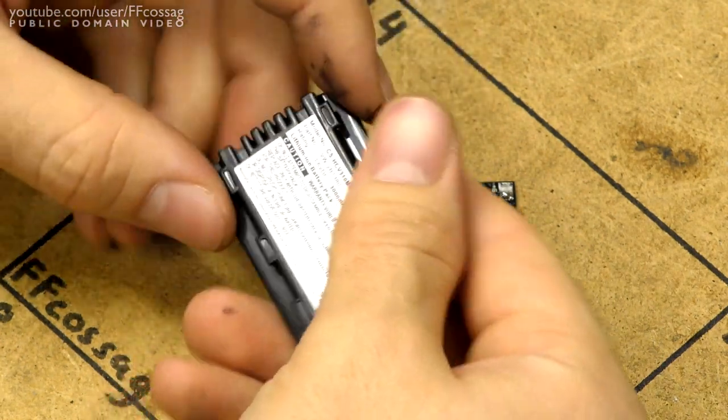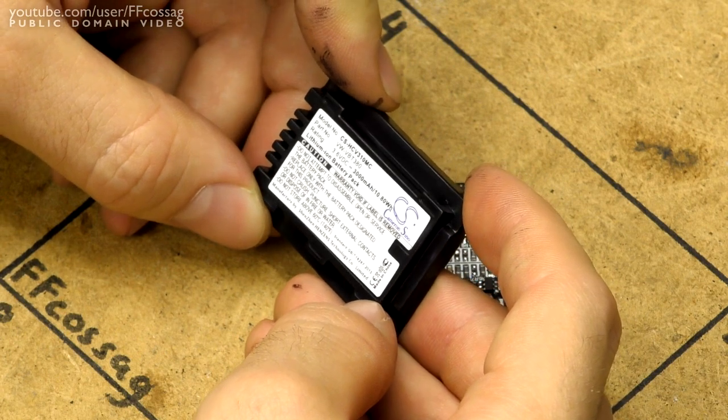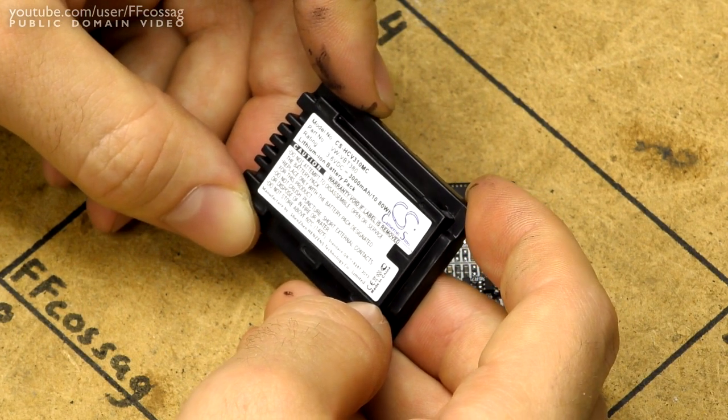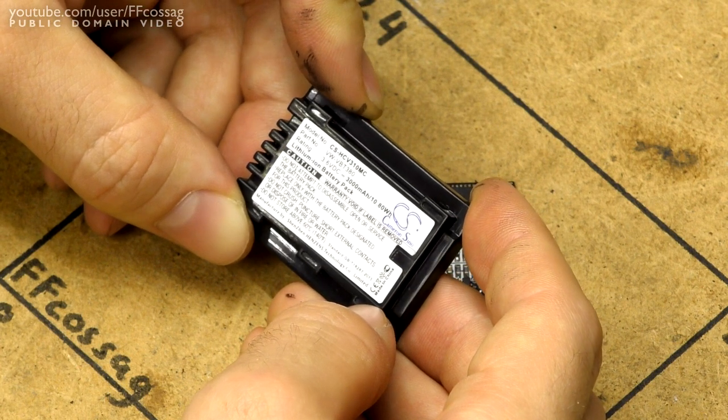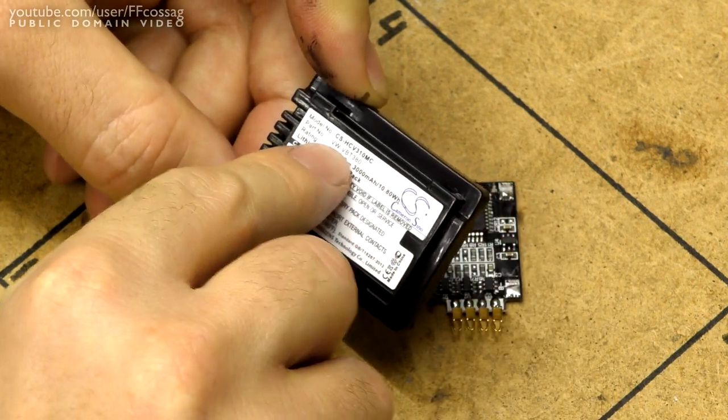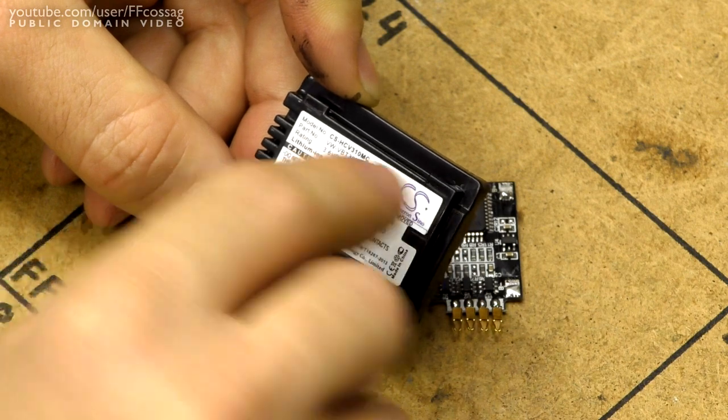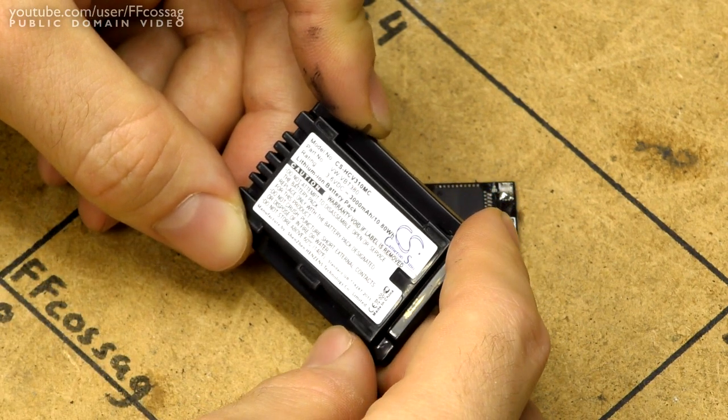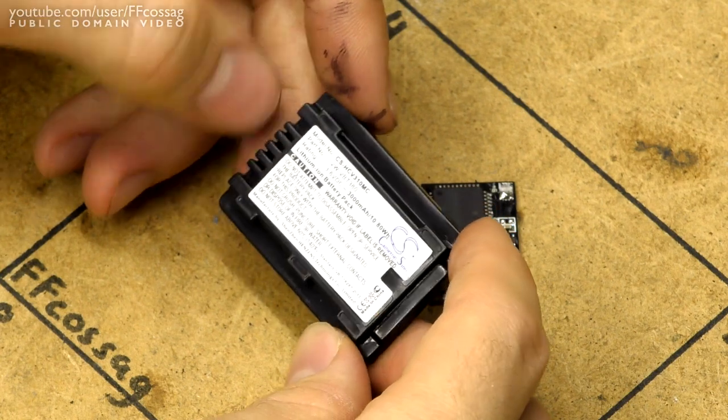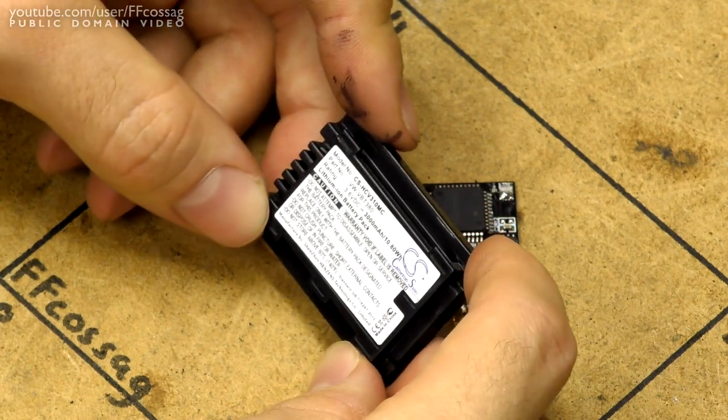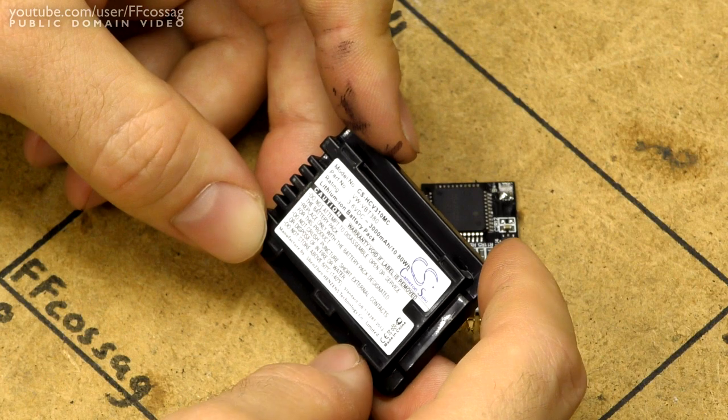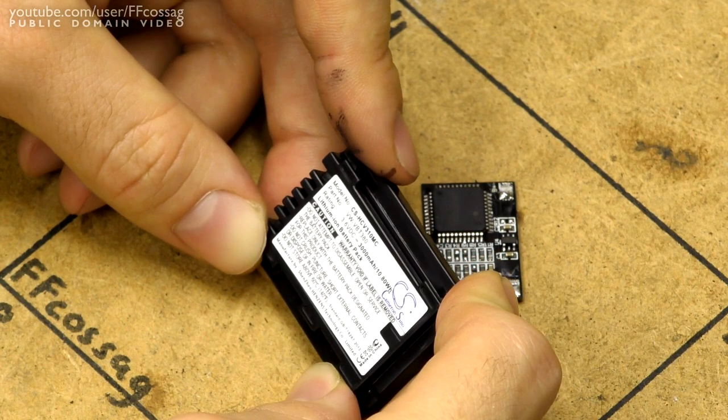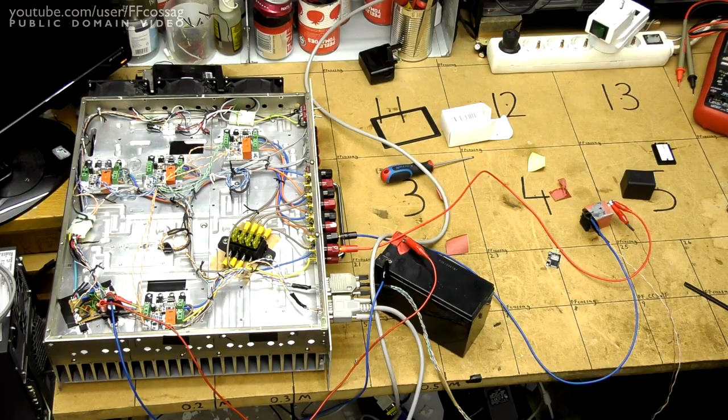That's a teardown of a Cameron Sino CS-HCV3110MC. Part number Volkswagen VBT380. That's the Panasonic number which it seems to kind of replace in some circumstances. Rated 3 amp hours. Yeah, I could test that. But I can't be bothered.